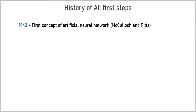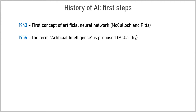The ideas of artificial intelligence raised approximately at the same time as the appearance of first computers. In 1943, a first computational model for artificial neural networks was created, based on algorithms of threshold logic. The term artificial intelligence was proposed much later, in 1956, and the field of artificial intelligence research was founded as an academic discipline.